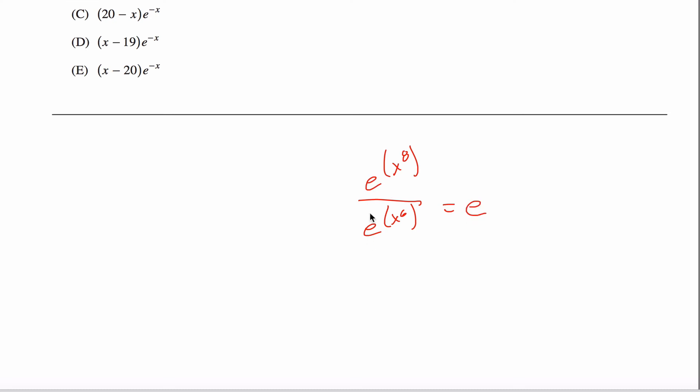I got a quotient of two exponents. I remember there's a rule for that. If you have the same base, you can leave that base alone and then you just subtract those two exponents. So, I'll take this X to the 8th and from that I will subtract X to the 6th.